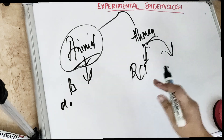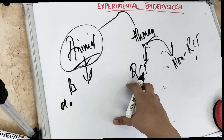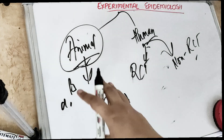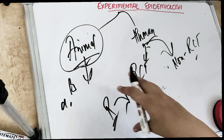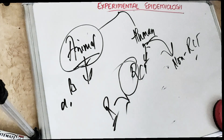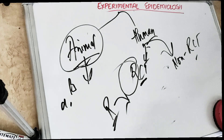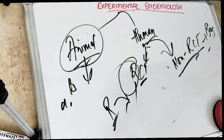RCT stands for randomized controlled trial. 'Random' means you are selecting the target population randomly — the people in your cases or your control group are selected randomly. That is why it is called a randomized controlled trial. Non-randomized controlled trials are trials in which there is no random selection, so a lot of bias can occur.